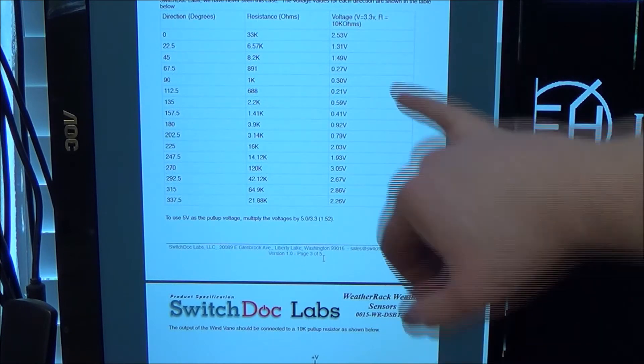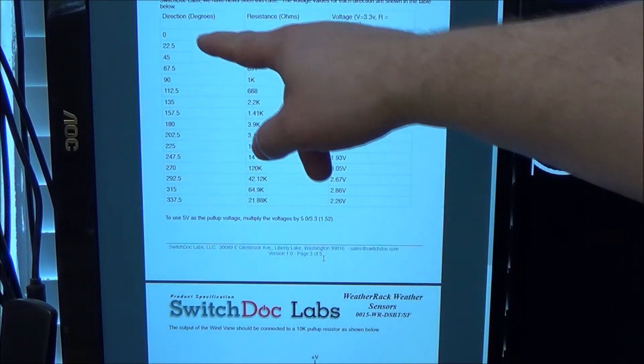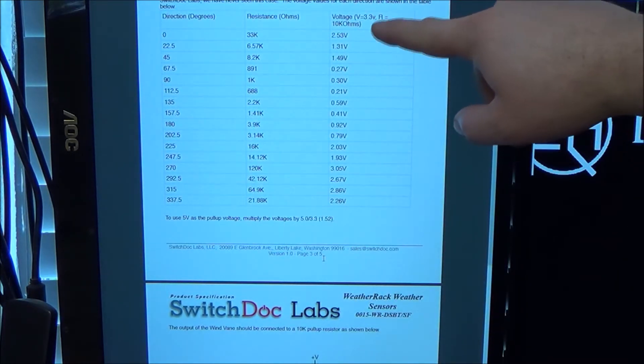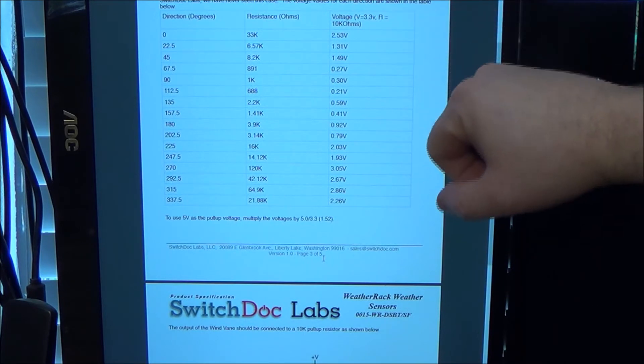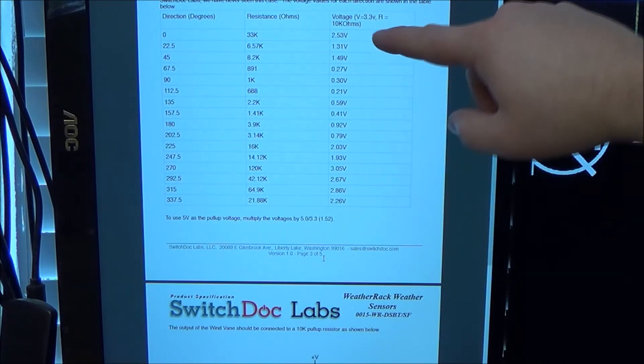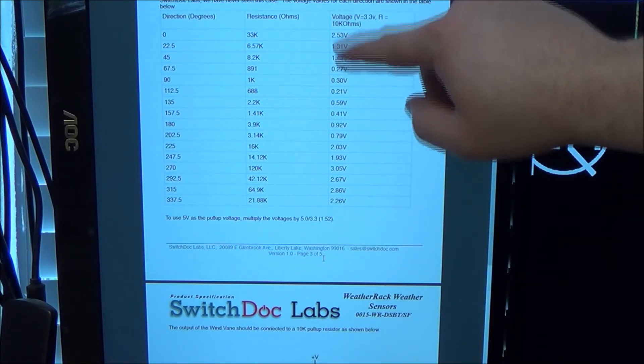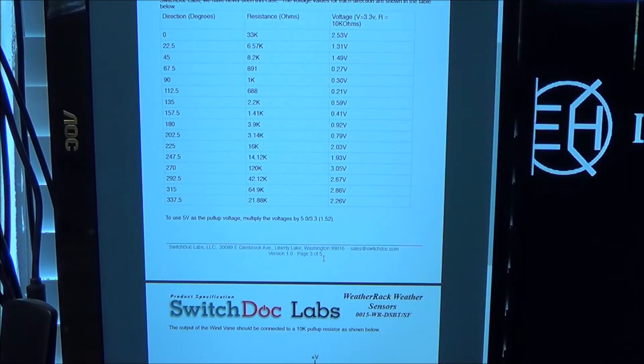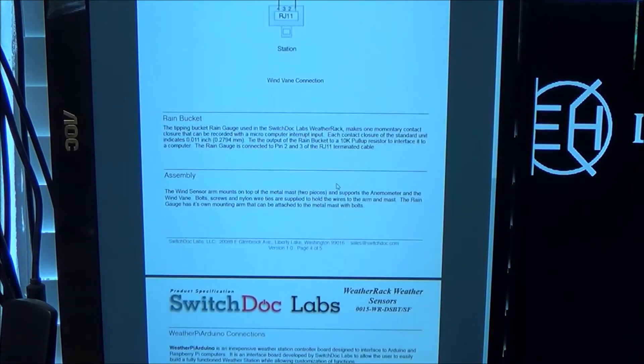Here's where it shows the wind direction. The direction in degrees and what the resistance values would be. And then, if you had 3.3 volts over the 10K ohm resistor, these are the voltages you would see. You can just stick a meter on there and read those. And then the rain bucket.